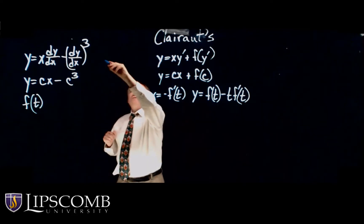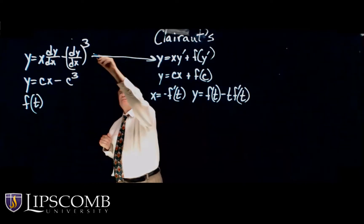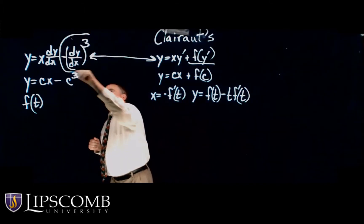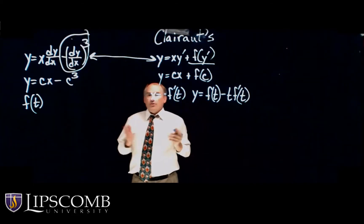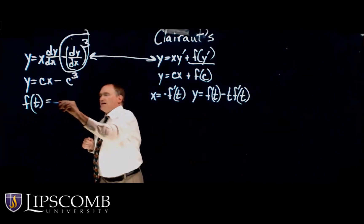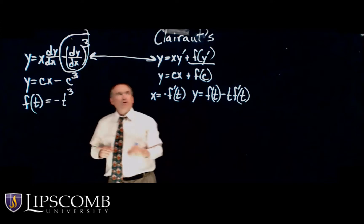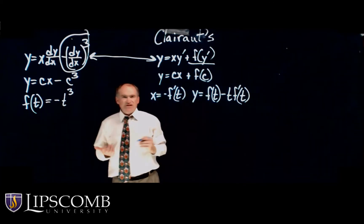So it's of this form right here. And so I see F of Y prime is this part. So therefore I've got F of T is negative T cubed, because where I see the Y prime, that's the T.